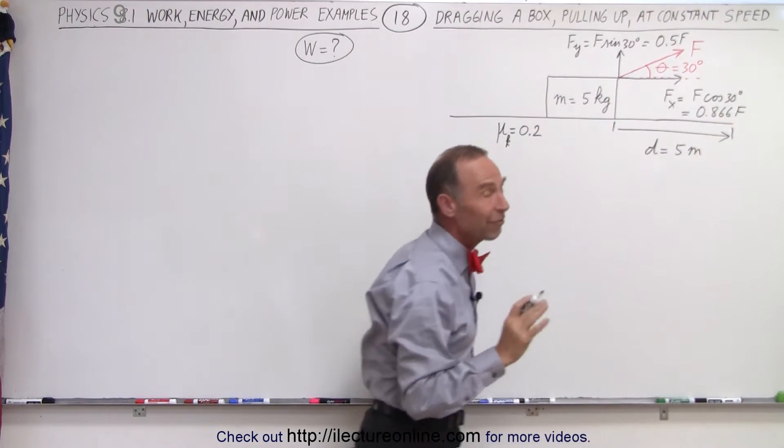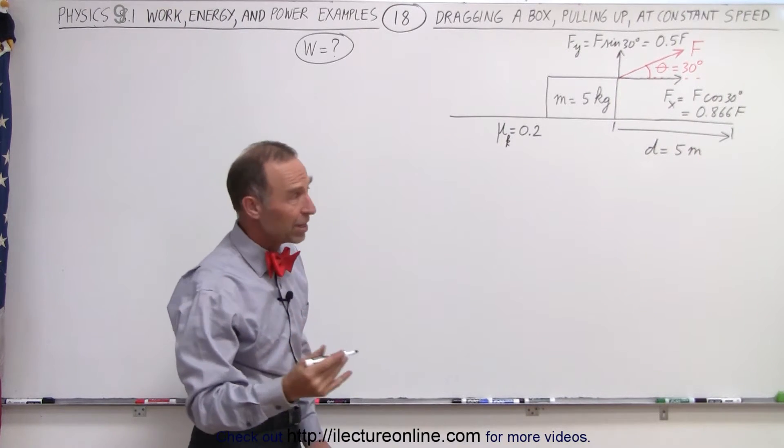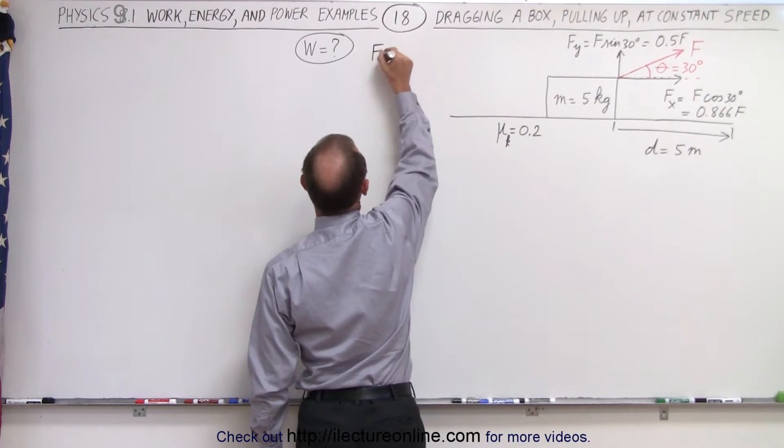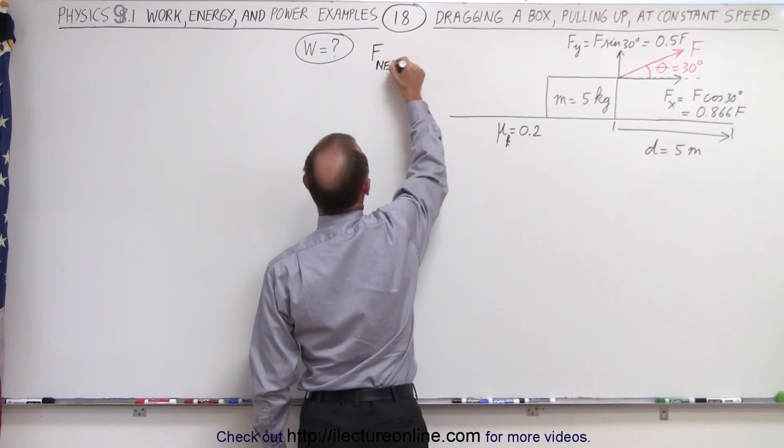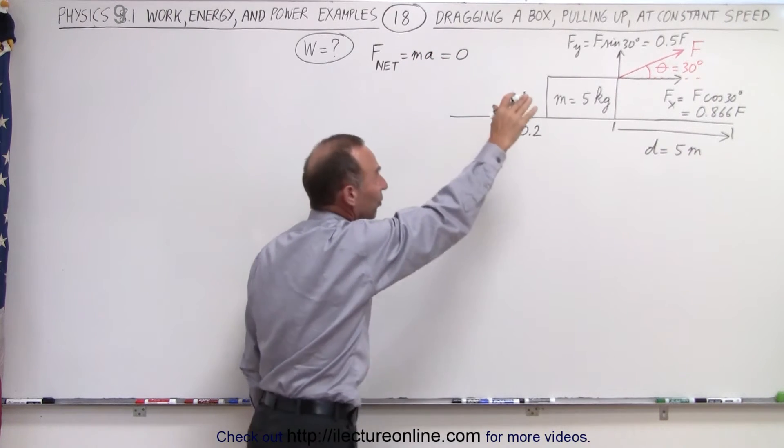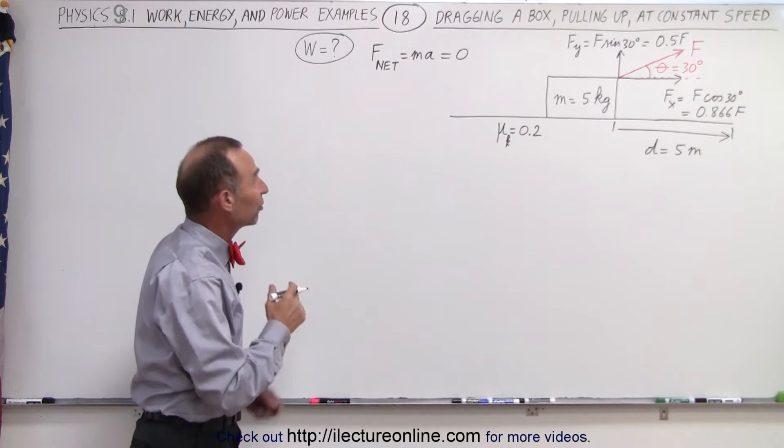We don't know yet what f is, but we are given the hint that we're moving the box at a constant speed, which means constant speed, acceleration is zero. We can use the equation F_net, which is equal to mass times acceleration. Since we know that there's no acceleration since we're moving at constant speed, we therefore know that F_net must equal zero.